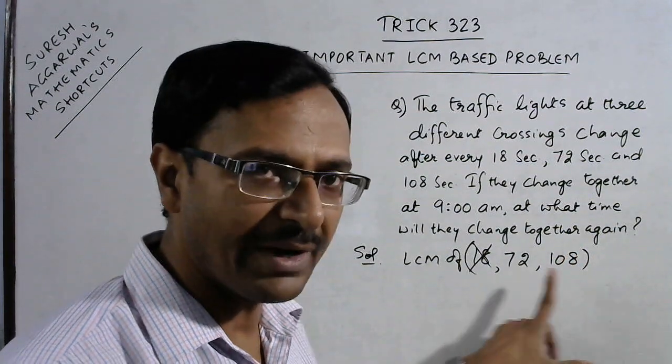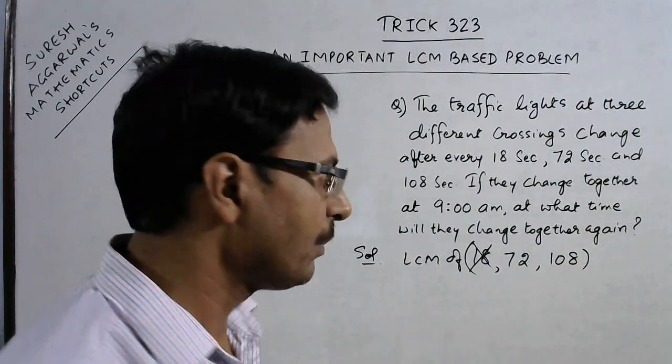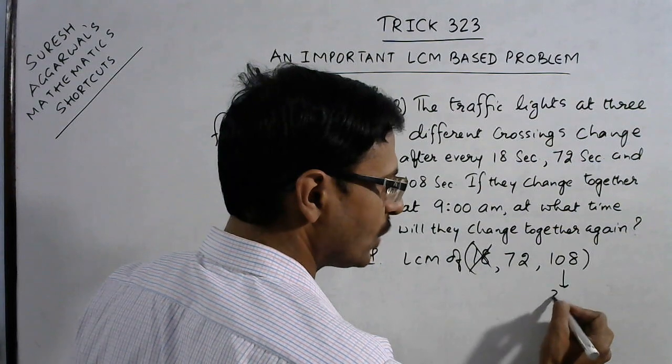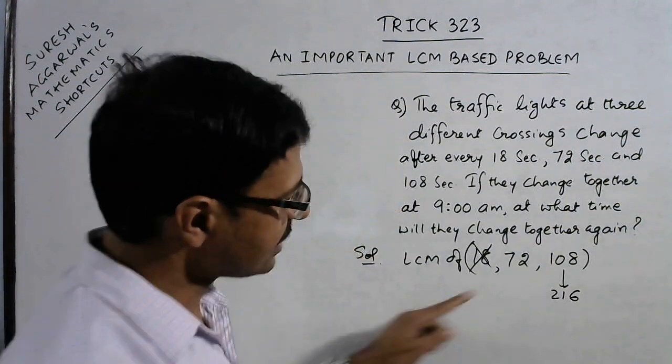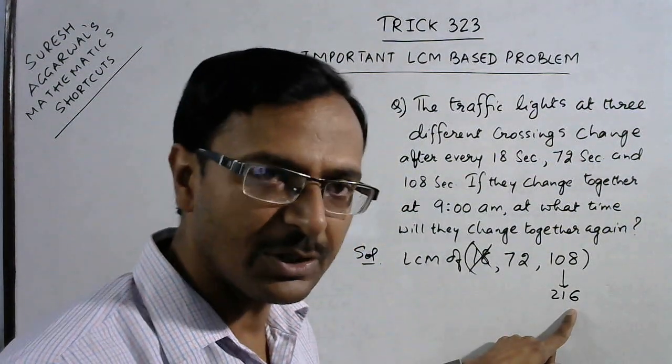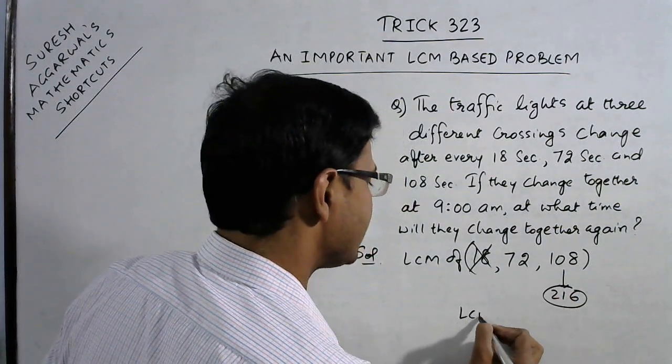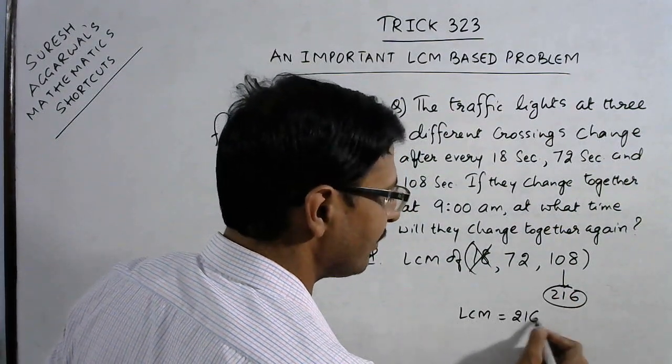So 18 is omitted from our consideration and we have to just find the LCM of 72 and 108. 72 does not divide 108, but if you take multiples of 108, the next multiple is 216. So 72 times 3 is exactly 216. So this 216 is the LCM of the 3 given numbers.